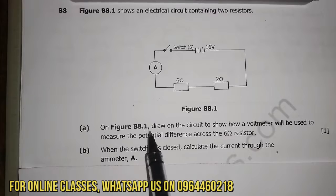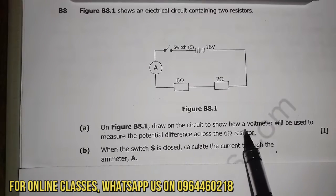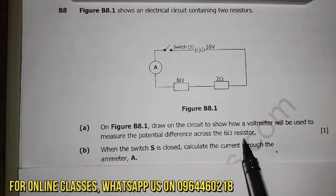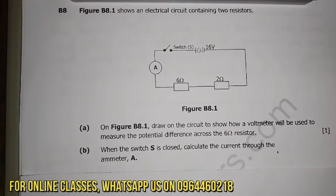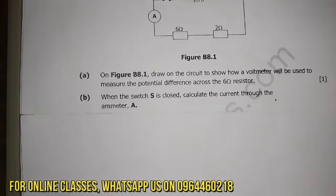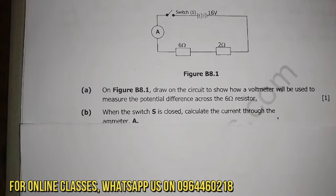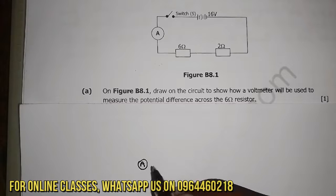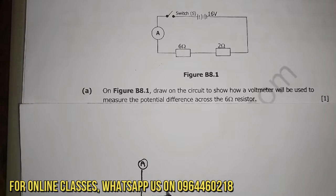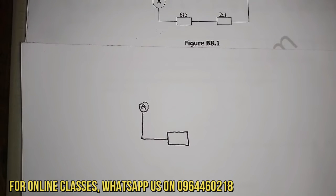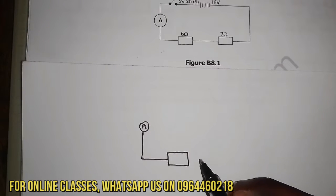So let's see the question. On figure B8.1, draw on the circuit to show how a voltmeter will be used to measure the potential difference across the six ohm resistor. So this is just one mark. So the most important thing for you to do is to actually redraw this one. So you just redraw it. So what you need to do is, you have A there, and then we are just drawing where the voltmeter is going to be.